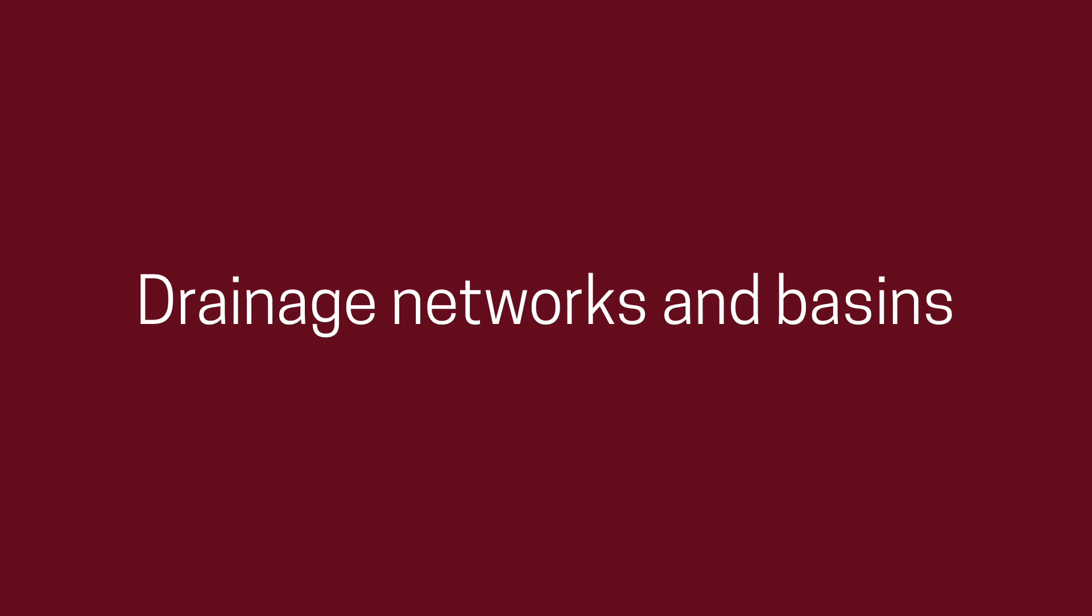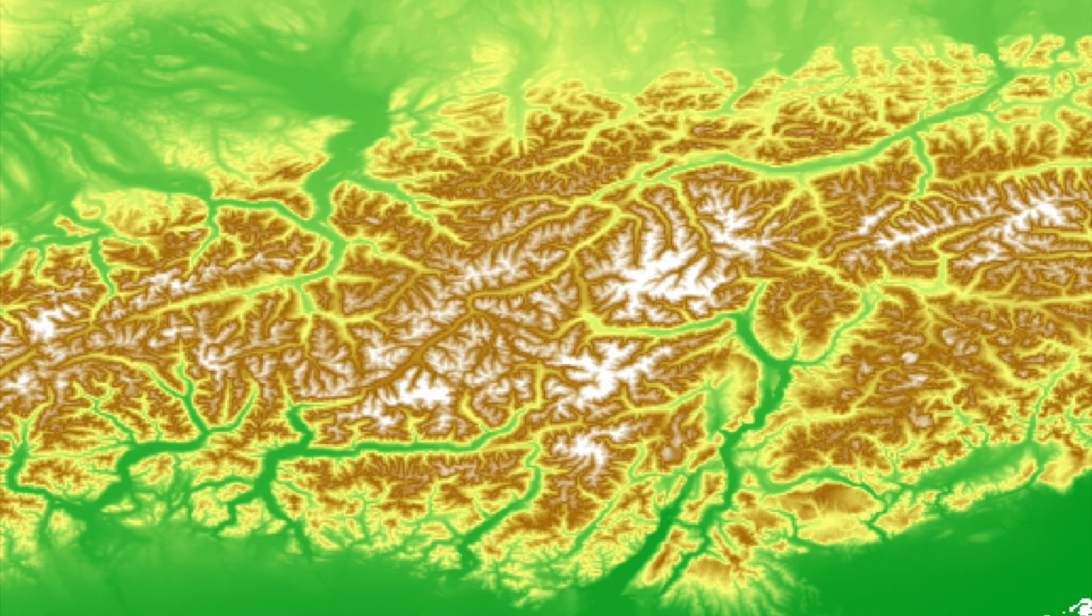Finally, let's look at two concepts that can be derived from the flow direction and the flow accumulation in a DTM, drainage networks and basins. Starting with a DTM, in this case one of the Alps, we first compute the flow direction. The colors here correspond to one of the eight directions.